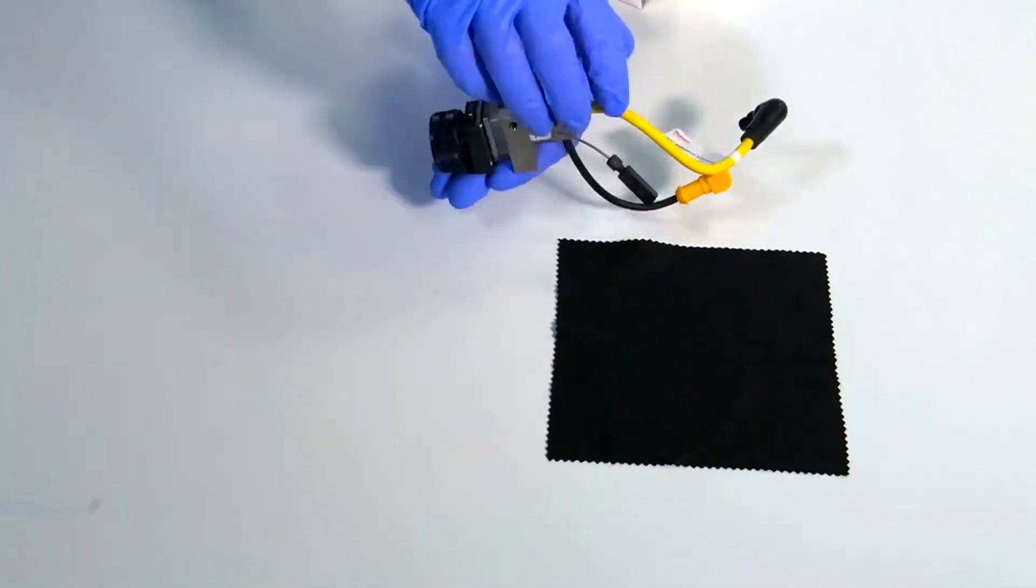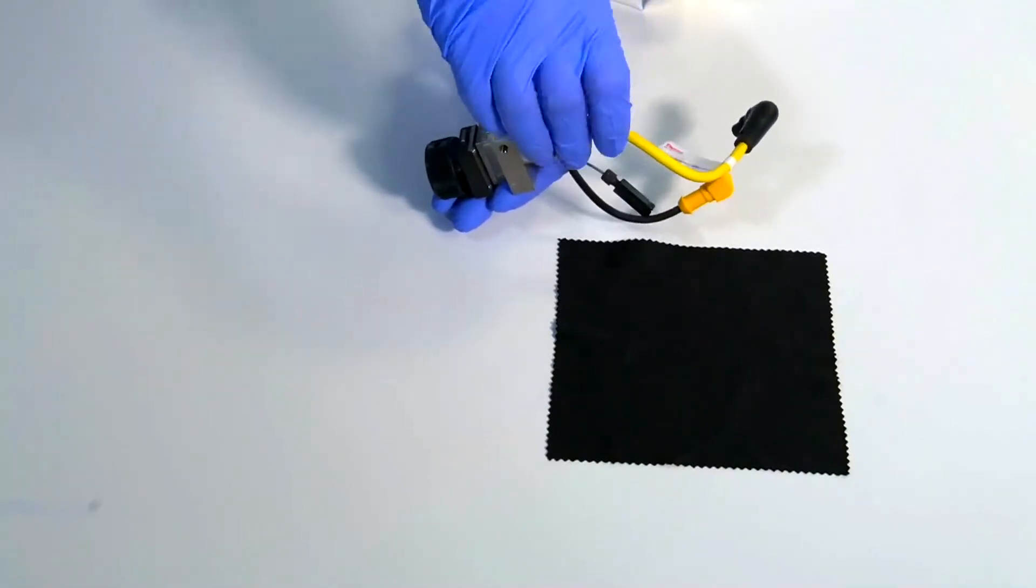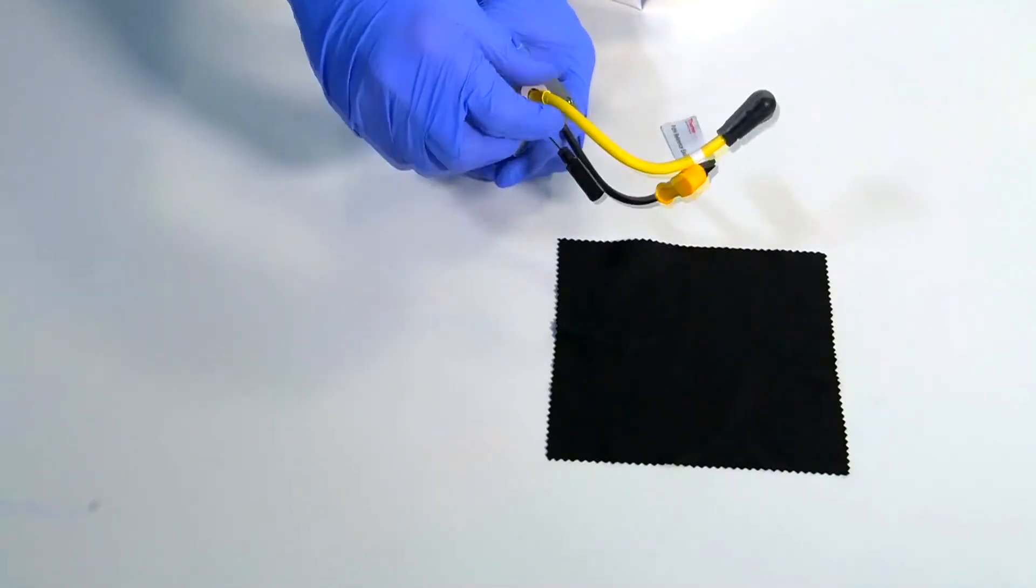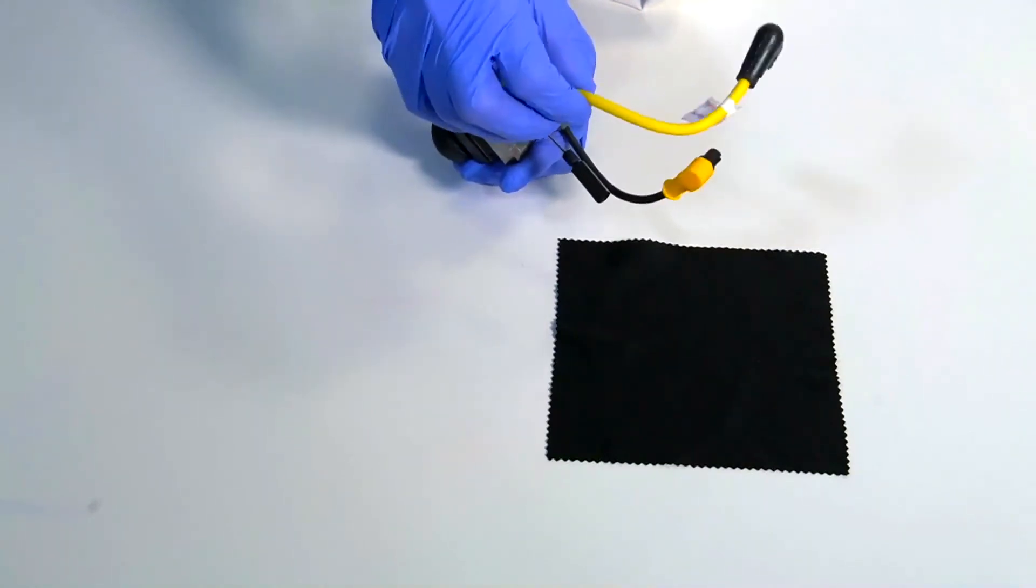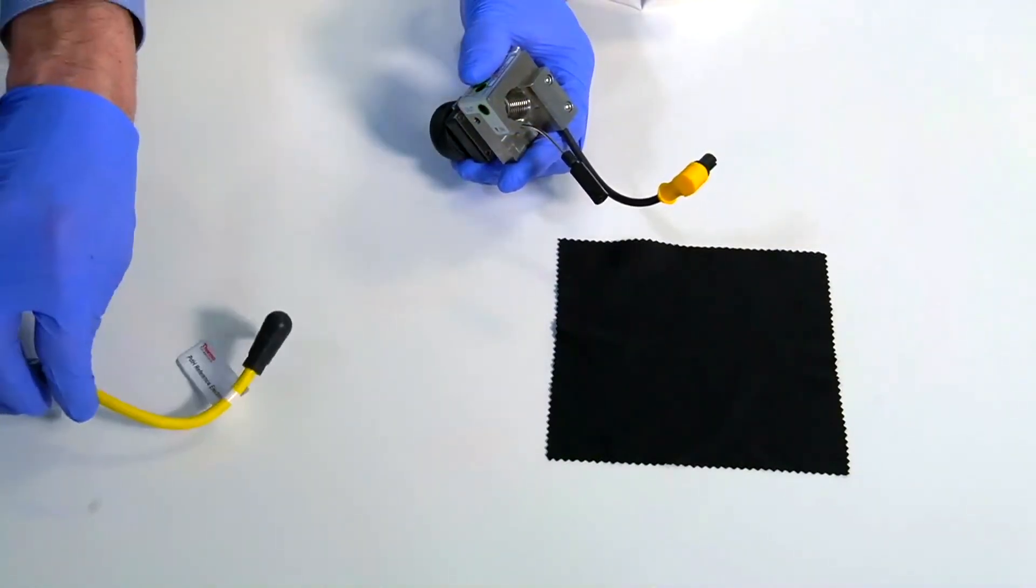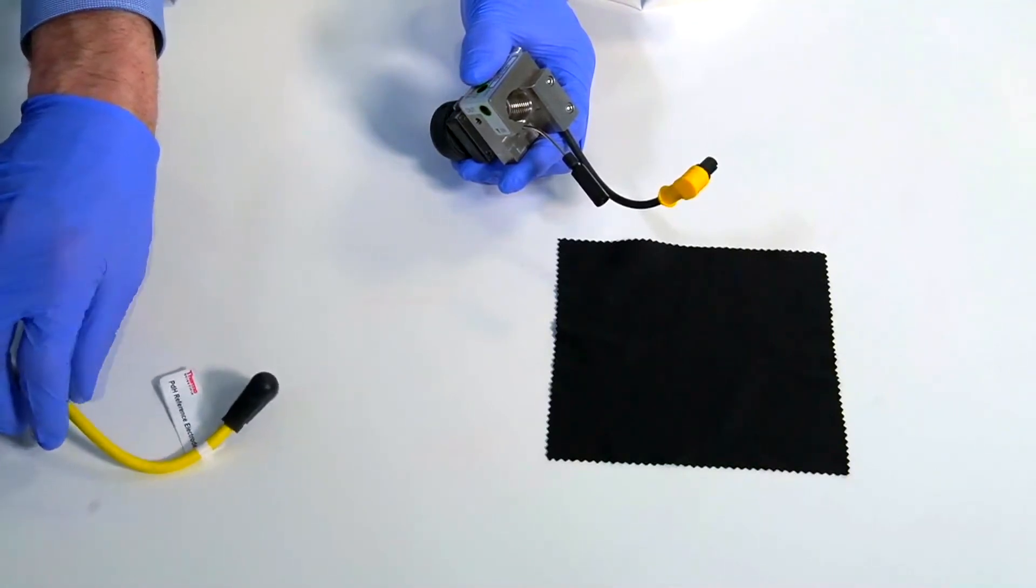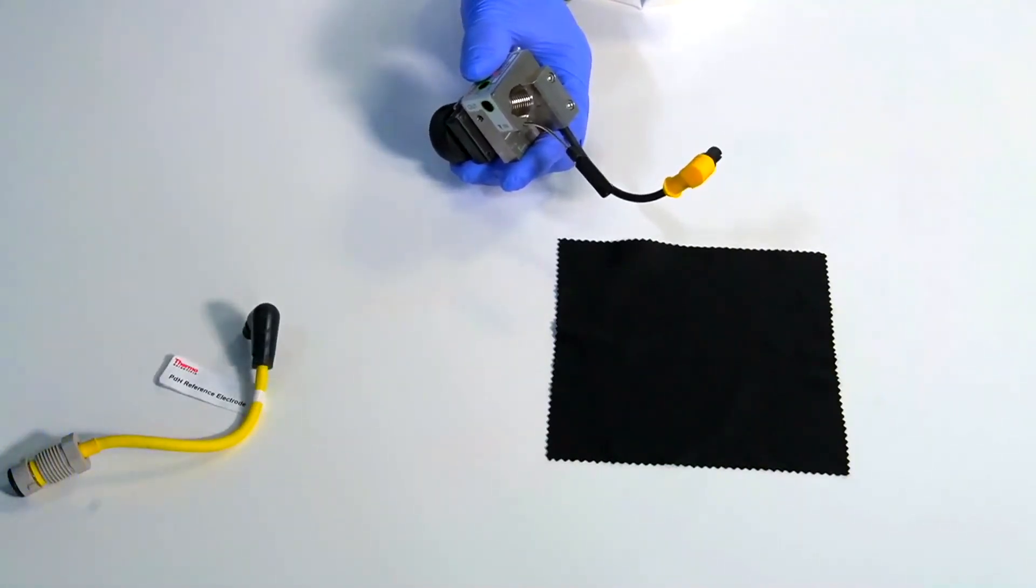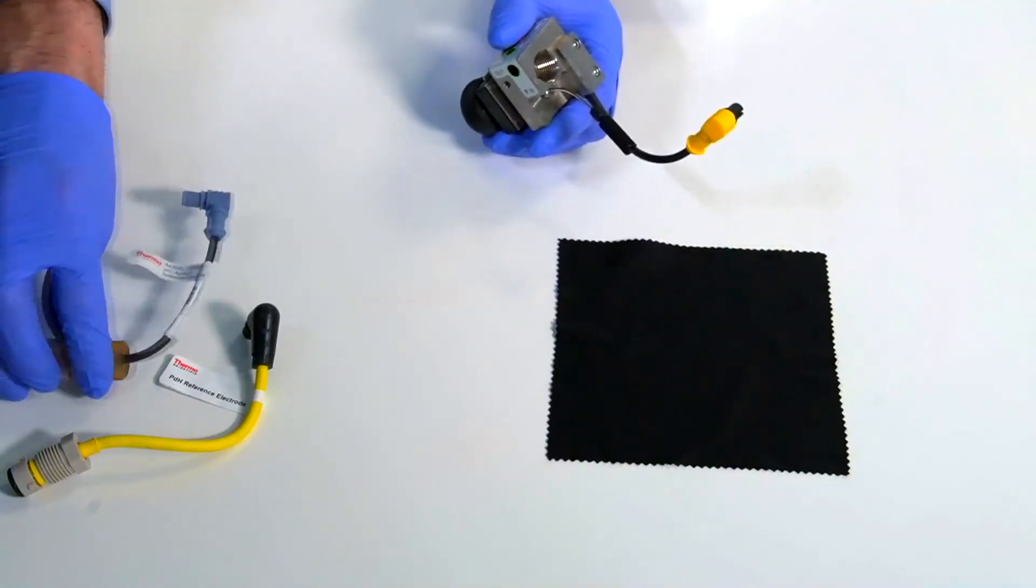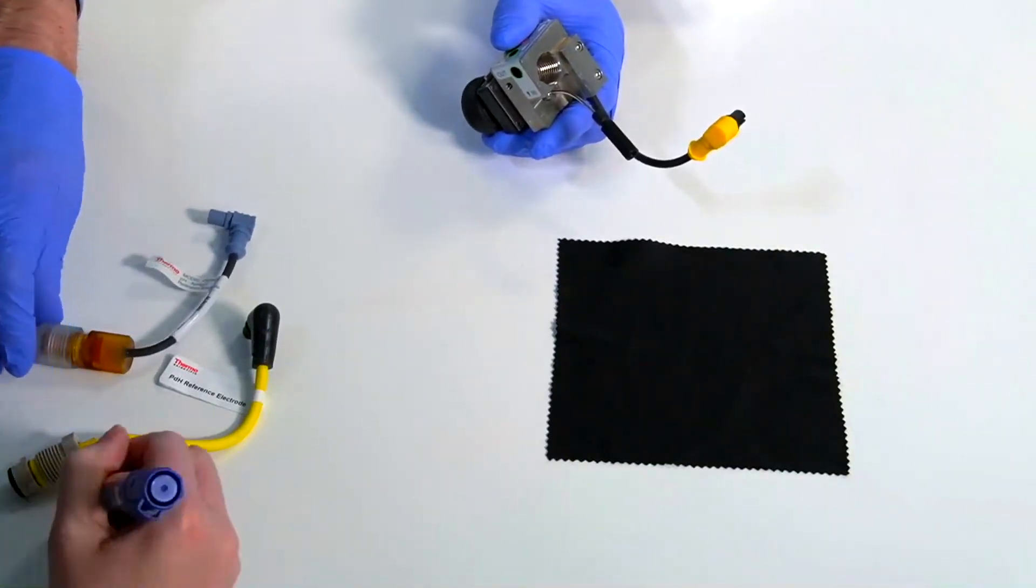First I'll remove the reference electrode by unscrewing this fitting here. This one's called a PDH electrode. The other type of reference electrode that you may have is a pH and silver silver chloride electrode. We'll talk more about those later, but that's the way the two different electrodes look.